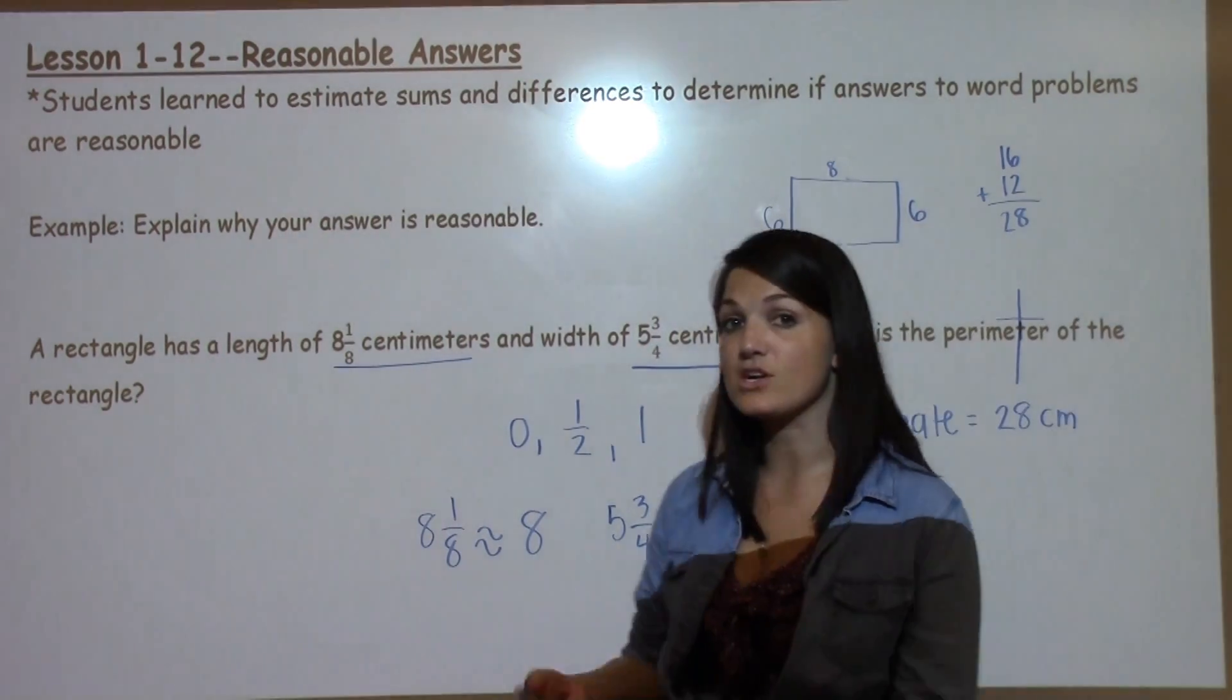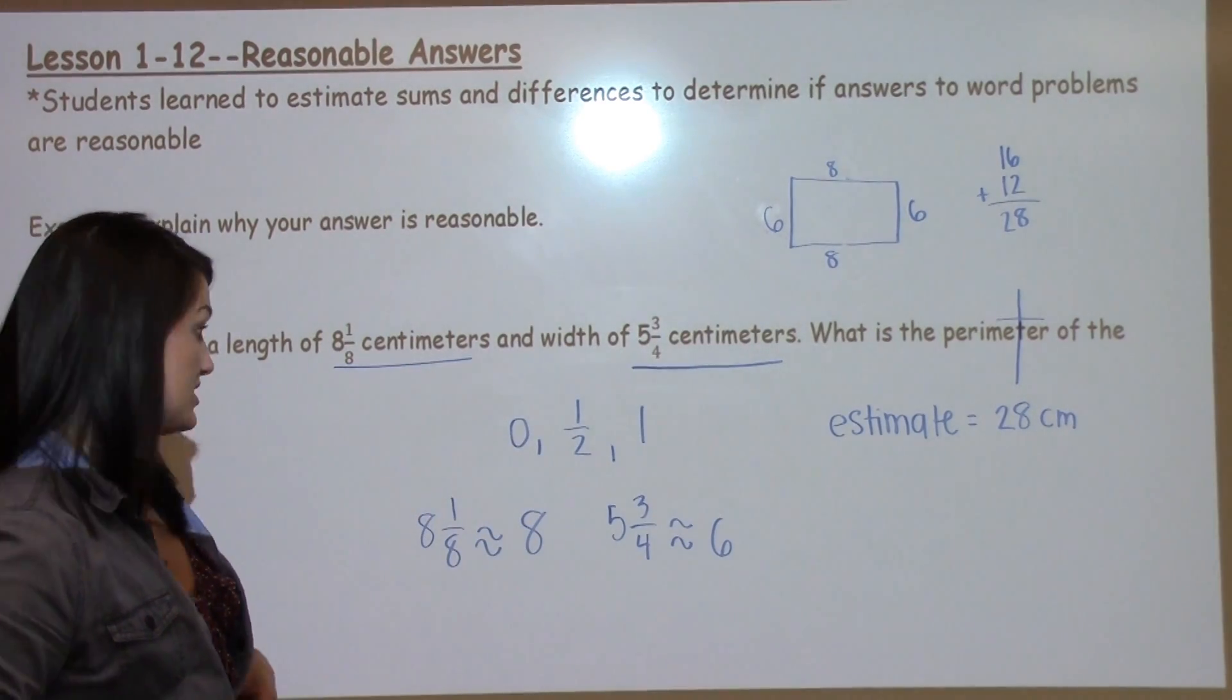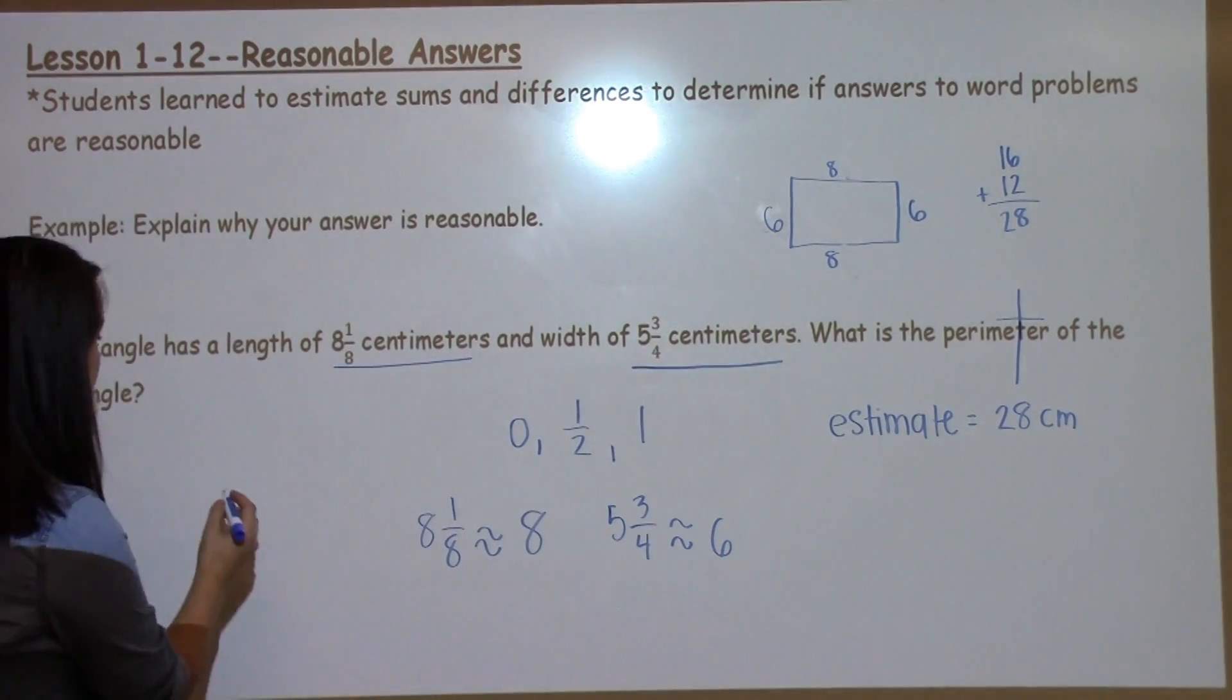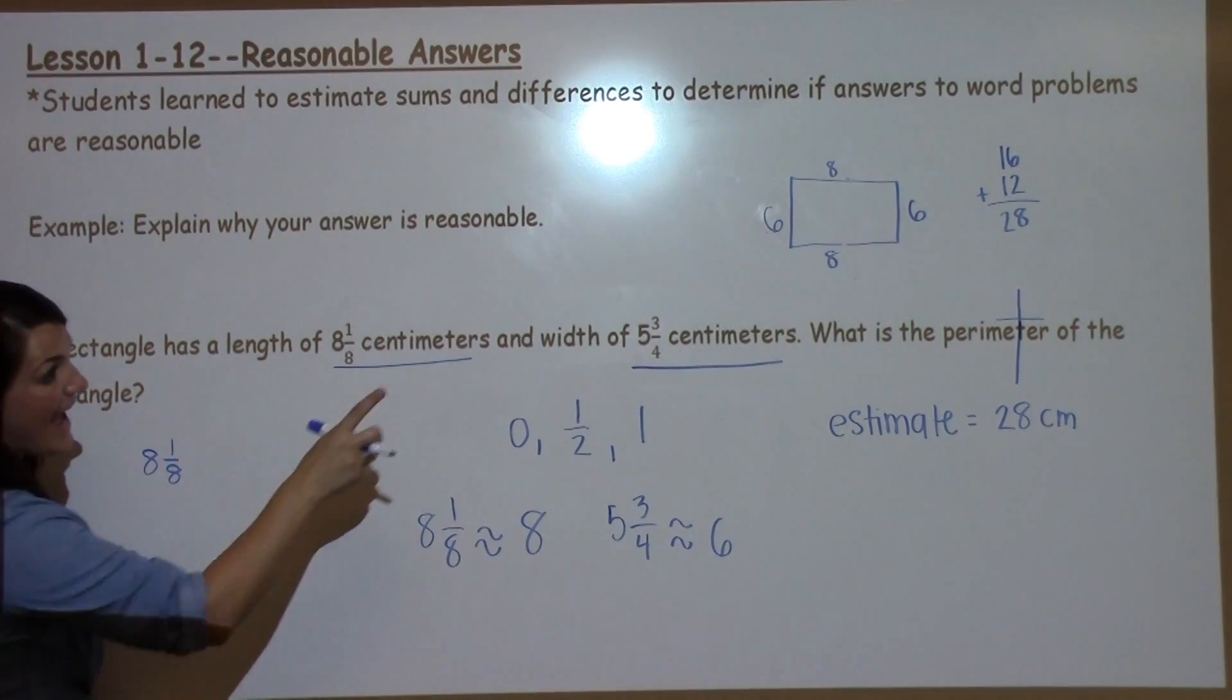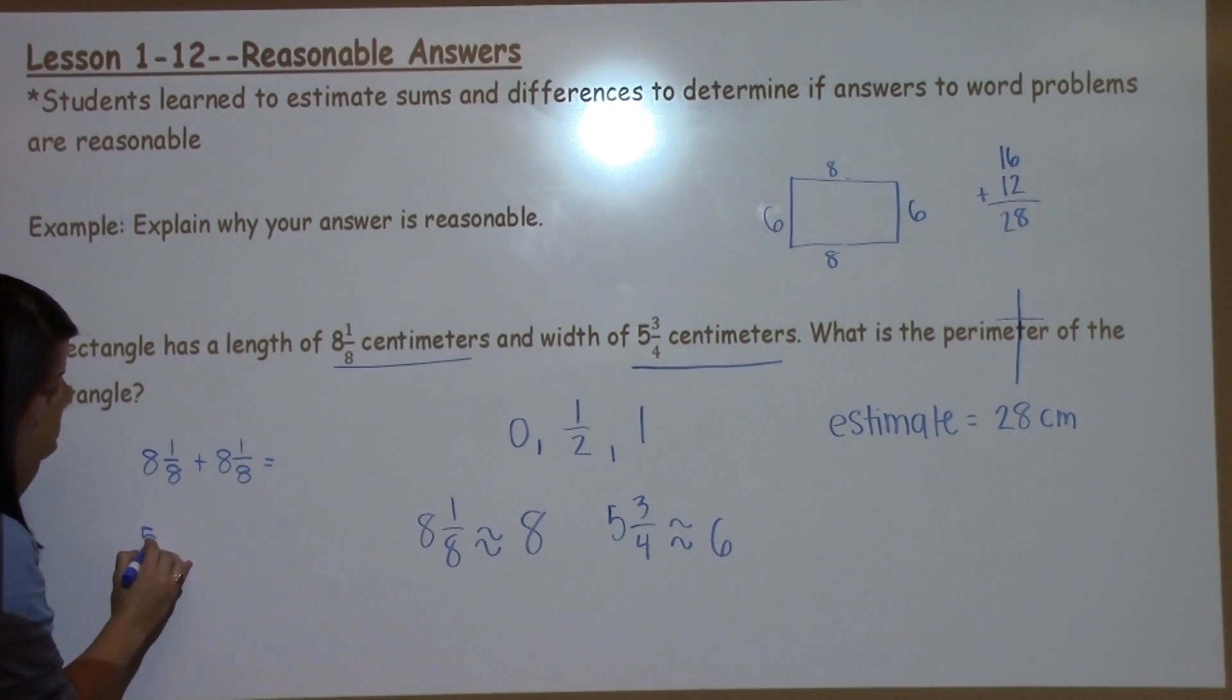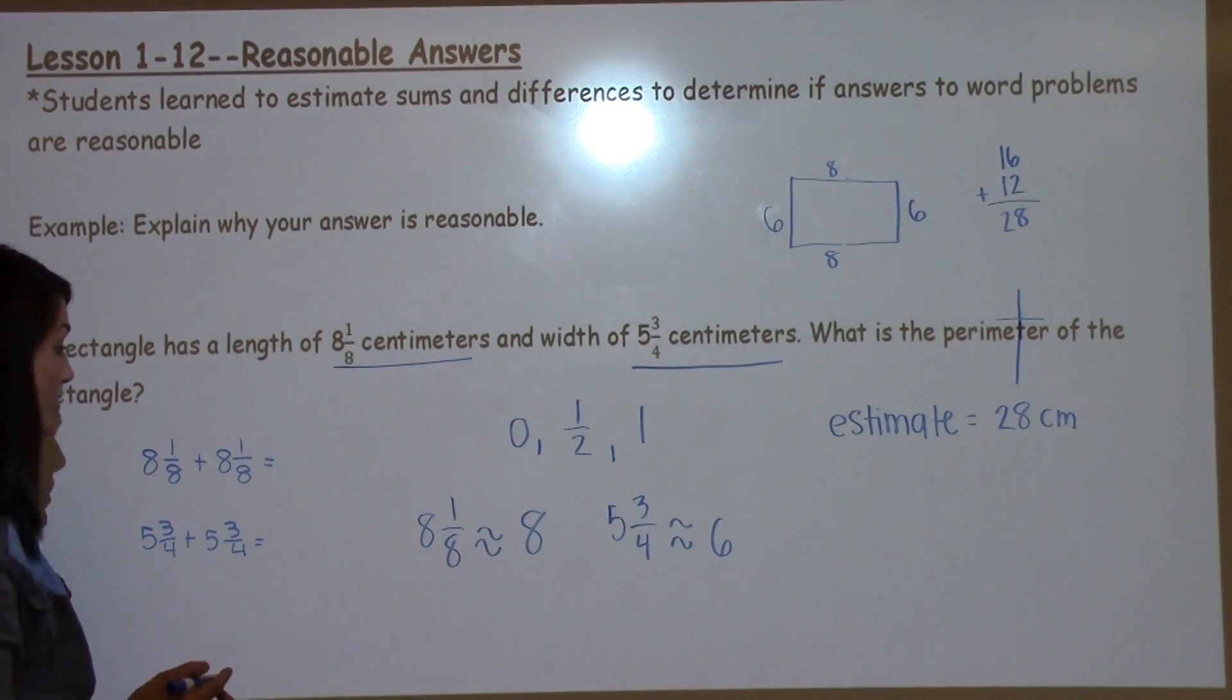Now I have to actually solve the problem and describe whether my estimate is reasonable. So I'm going to take 8 and 1/8 and 5 and 3/4 and add them together. But I have two different sides, so I'm going to have to add 8 and 1/8 twice, 5 and 3/4 twice, and then add together my totals.